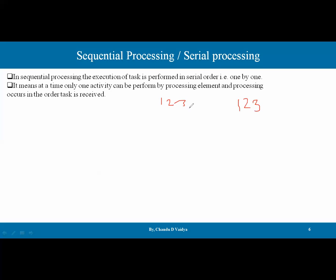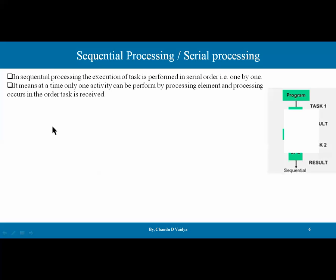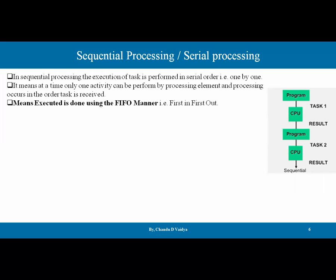It is not like that if a task arrives as number 3, it jumps ahead — it will be received in a certain order and operated in that same fashion only. To elaborate further, here is a diagram showing the program in the CPU: task 1 occurs, a result is generated, then another program comes in as the next task, the CPU performs it, and another result is generated. In this sequence, all processes are done.